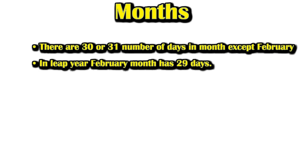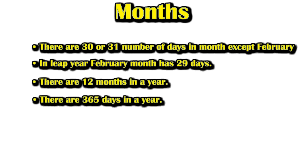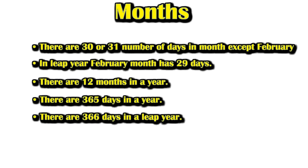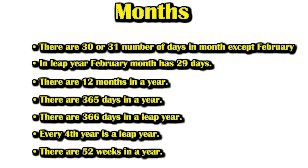In a leap year, February has 29 days. There are 12 months in a year. There are 365 days in a year, and 366 days in a leap year. Every fourth year is a leap year. There are 52 weeks in a year.